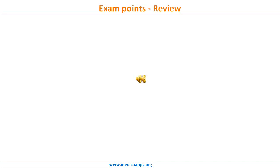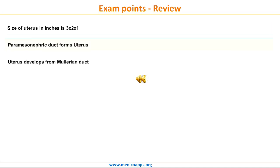At last, some important exam points to be remembered. Number 1: size of uterus in inches is 3 by 2 by 1. Number 2: the paramesonephric duct forms the uterus. Number 3: the uterus develops from the Mullerian duct. And the last important point: the uterus reaches up to the umbilical level at 24 weeks.